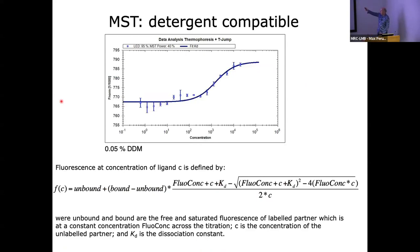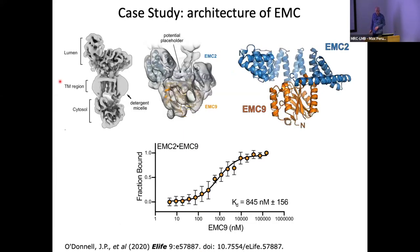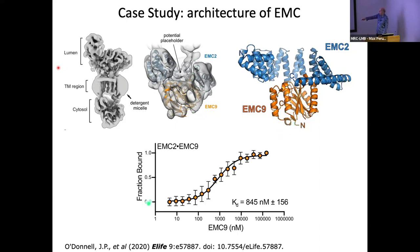MST is applicable to almost anything you can think of. Here's an example from the Hegde group, where they had this EMC complex seen by cryo-EM. They could see what seemed to be the sub-complex EMC9-EMC2, and the question was is this real? John O'Donnell labeled one of the components, EMC9, and could then follow the binding. He labeled EMC2 and did it every way as well to confirm the interaction.